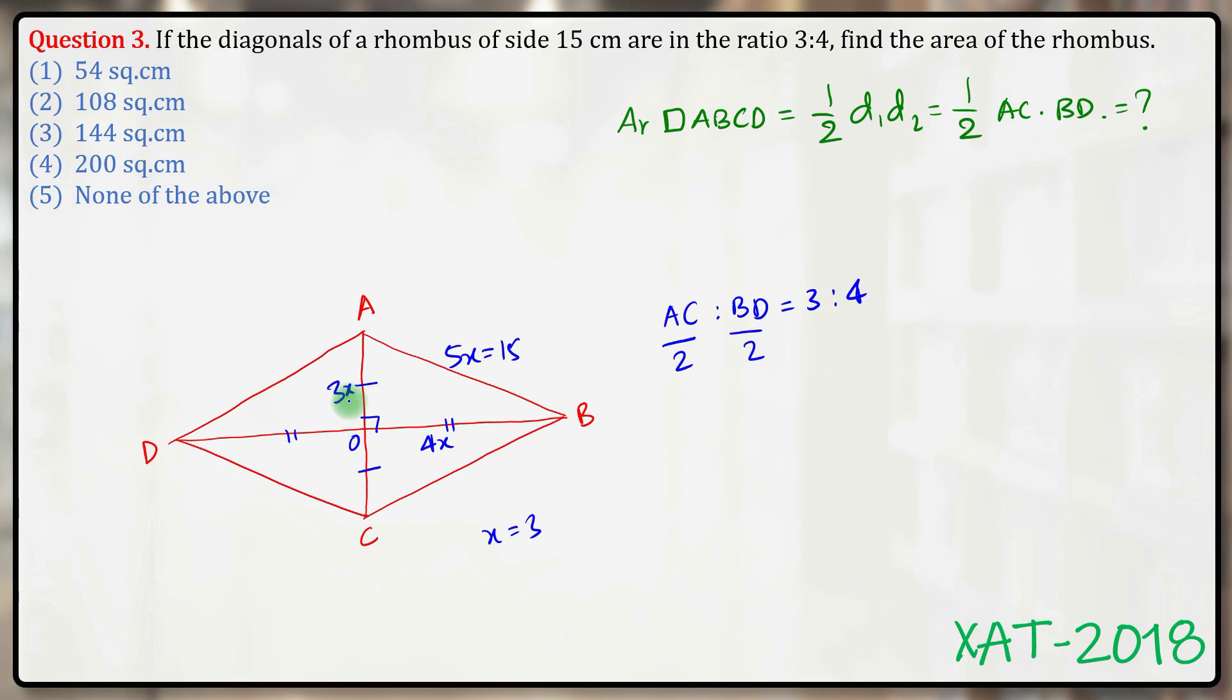Now if x equals 3, then 3x equals 9 and 4x equals 12. This entire length AC becomes 9 plus 9 equals 18, and BD becomes 24.